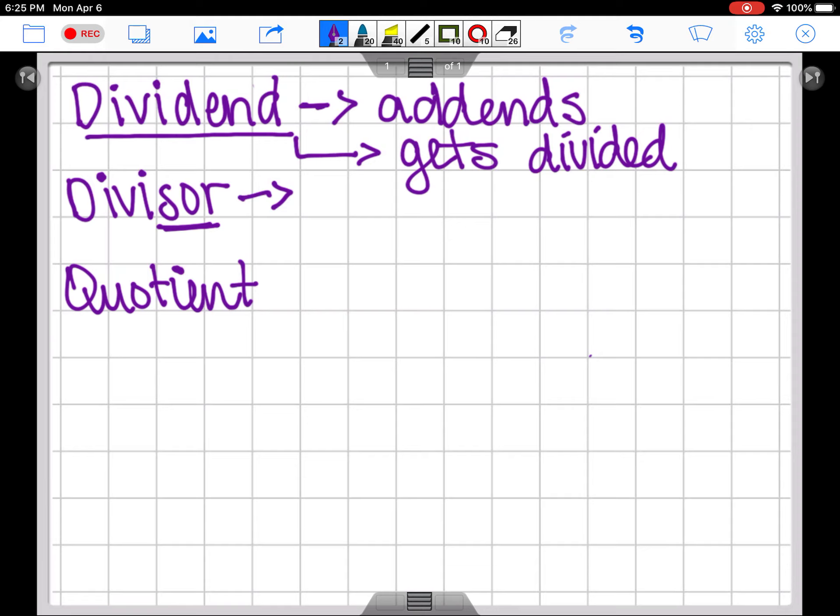All right, so some other words that have this ending are advisor, the one who will give advice. Aggressor, the one who is giving the aggression. A supervisor is a person who supervises. So those are some examples that help us remember that the divisor is the one who divides.